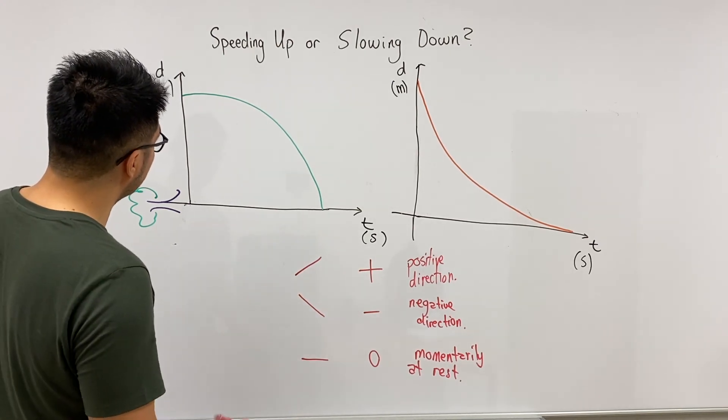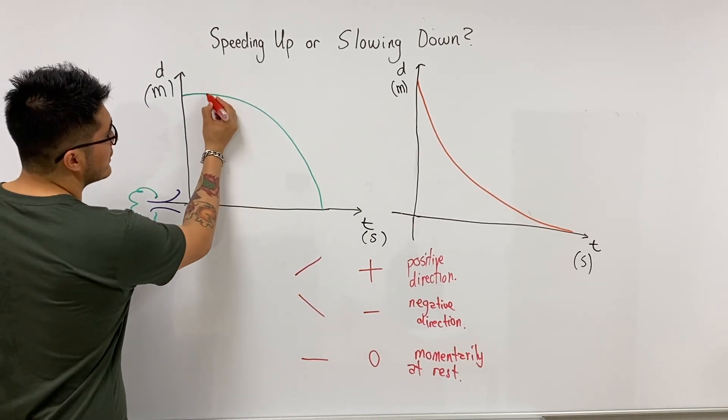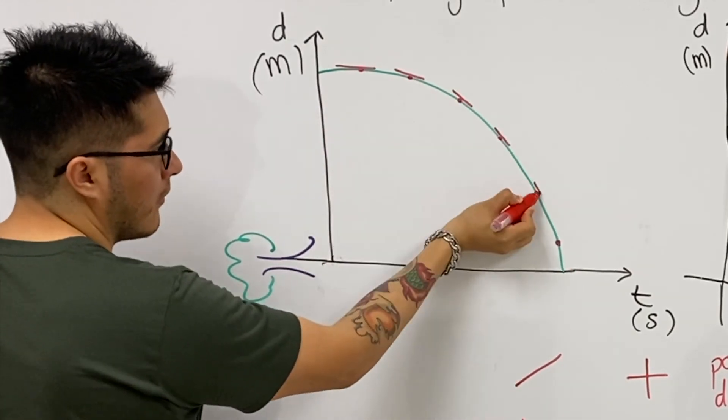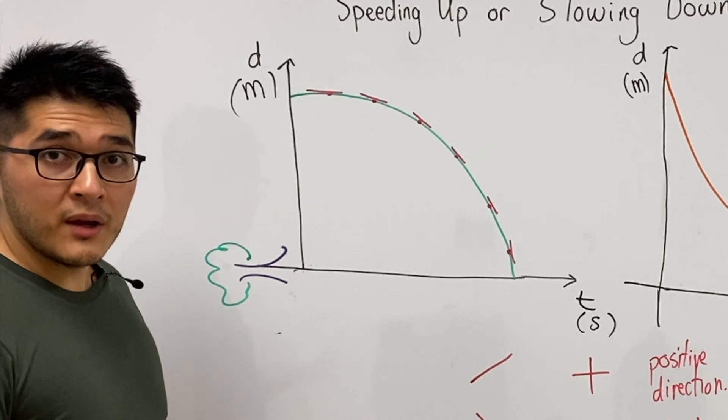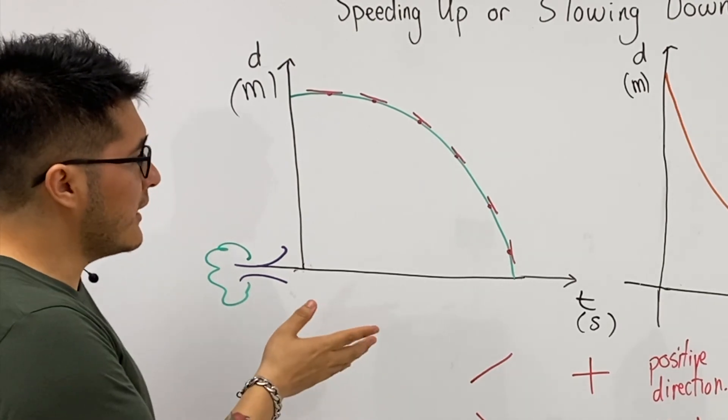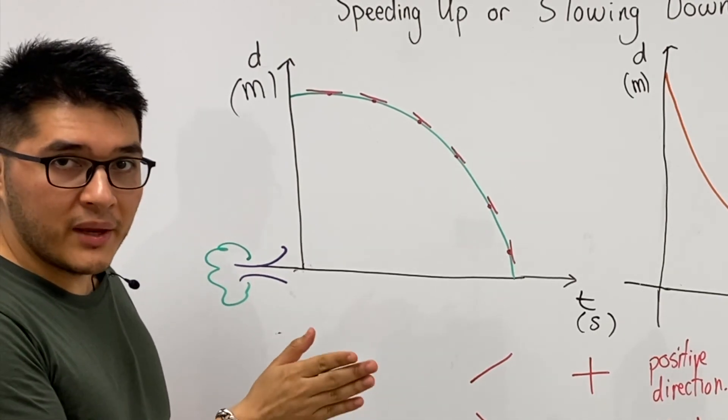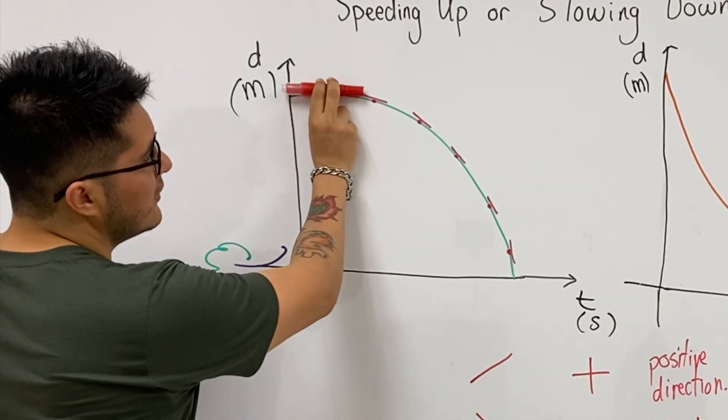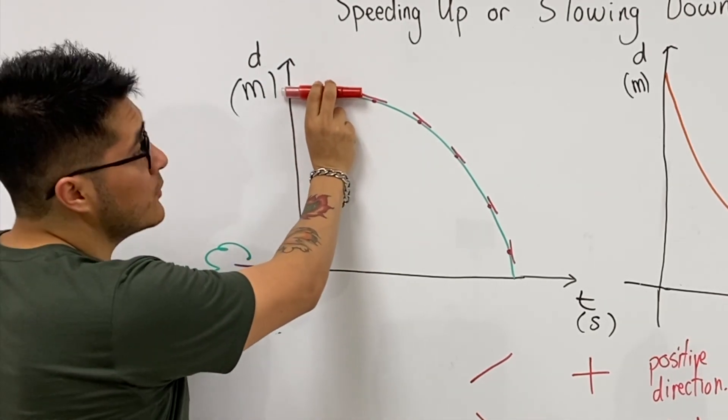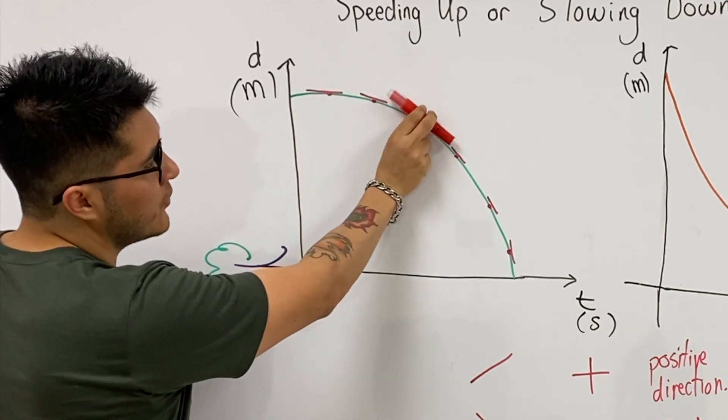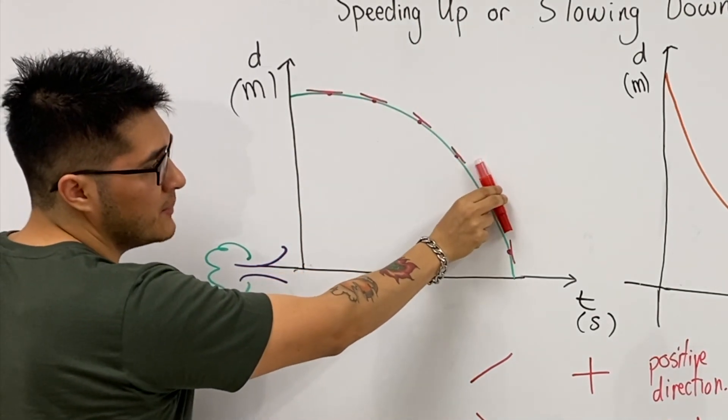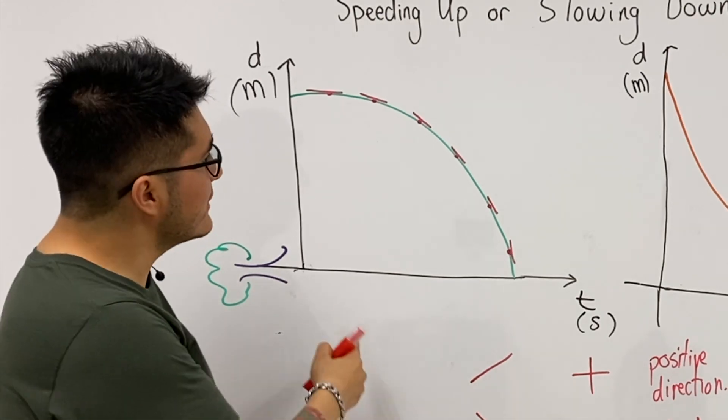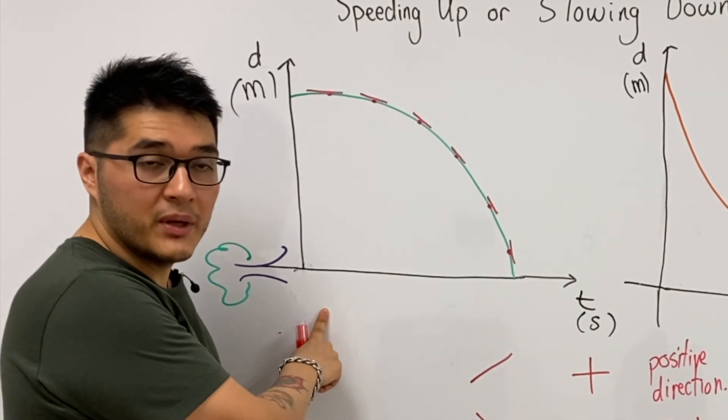So let's pick a few random points on the curves and then we're going to draw the tangent. Right away, without actually making up any numbers, you can see based on the steepness at the very beginning, the steepness is almost zero. And as you move forward with time, the steepness begins to increase. So most certainly this is going to be the case of speeding up.